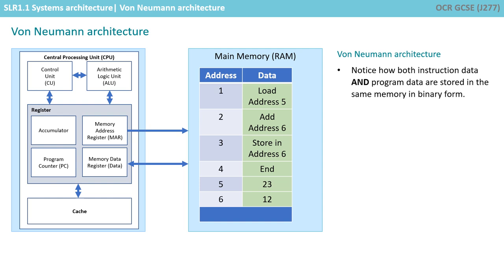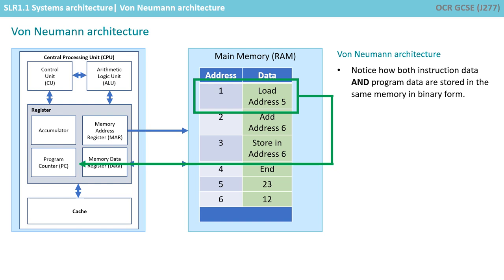Let's have a closer look at the memory. You will notice that each instruction is stored in a location in the memory, and each location has an address. Therefore, the processor can fetch an instruction stored in memory address 1, for example, and bring it back into the processor.